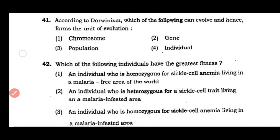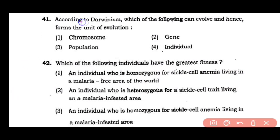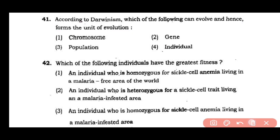Question number 41: According to Darwinism, which of the following can evolve and hence forms the unit of evolution? Chromosome, gene, population, or individual. The answer is option 3 — according to Darwinism, population is the unit that can evolve; evolution occurs at the population level and population is the basic unit of evolution.